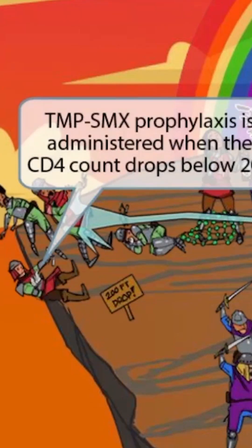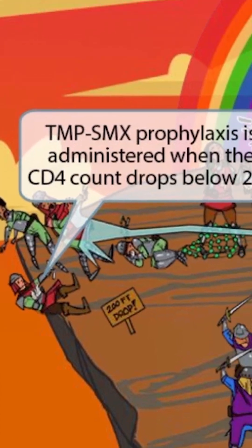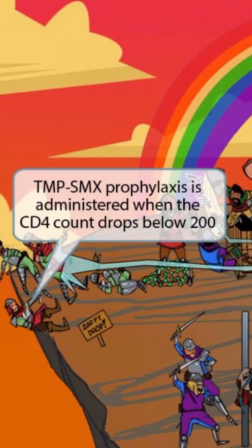If we look back over to the left side of the image, one of the good soldiers is getting knocked off the cliff right next to the 200-foot drop sign. He's holding some meth crystals in his hand, which is our symbol for TMP-SMX. The fact that he's right next to the 200-foot drop sign should help you remember that TMP-SMX prophylaxis is administered when the CD4 count drops below 200. This is to prevent opportunistic infections such as Pneumocystis and Toxoplasma gondii.